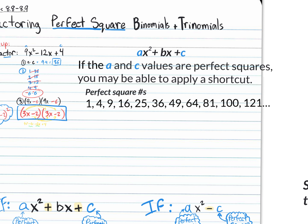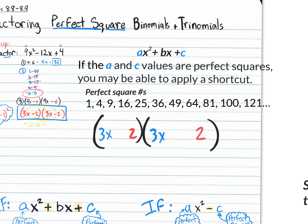Looking back at the warm-up question, we actually have a perfect square term in the front and a perfect square term at the back. So maybe we can use the shortcut of taking the square root of the first term, 9x squared, and the last term, 4, and plugging them into our answer format. The square root of 9x squared is 3x, and the square root of 4 is 2. So we put 3x and 3x at the start of each binomial, and 2 and 2 at the end.